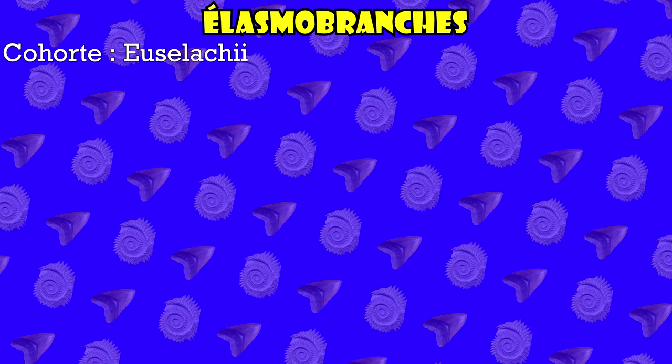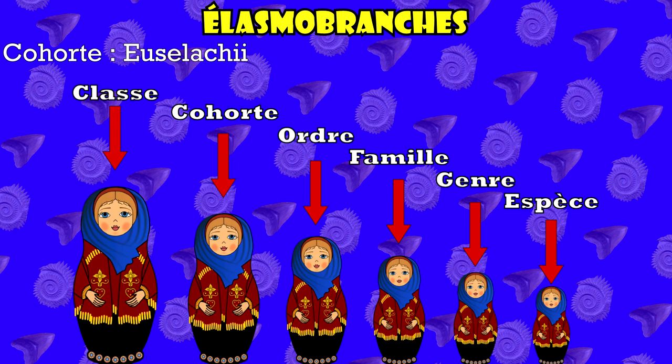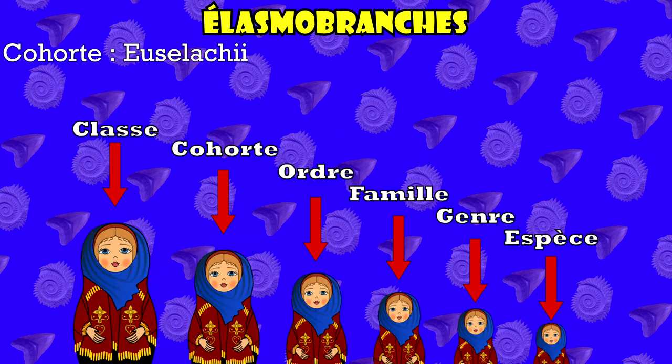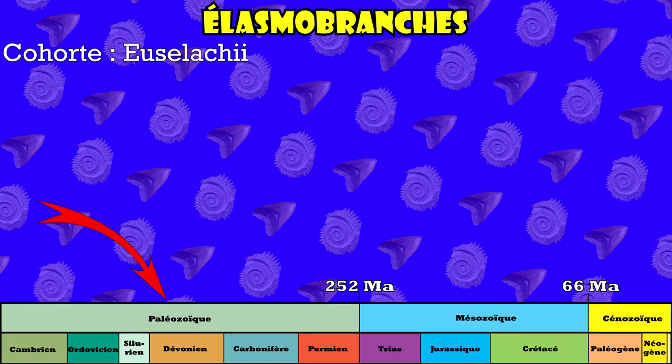Les Euselachiens, qu'on peut traduire par vrais sélaciens, est ce que l'on appelle une cohorte du point de vue de la systématique — c'est entre la classe et l'ordre, pour faire simple. Ce grand groupe apparaît au Dévonien et est toujours présent dans nos océans. Avant de voir les spécimens encore vivants, voyons les ordres qui eux se sont éteints.